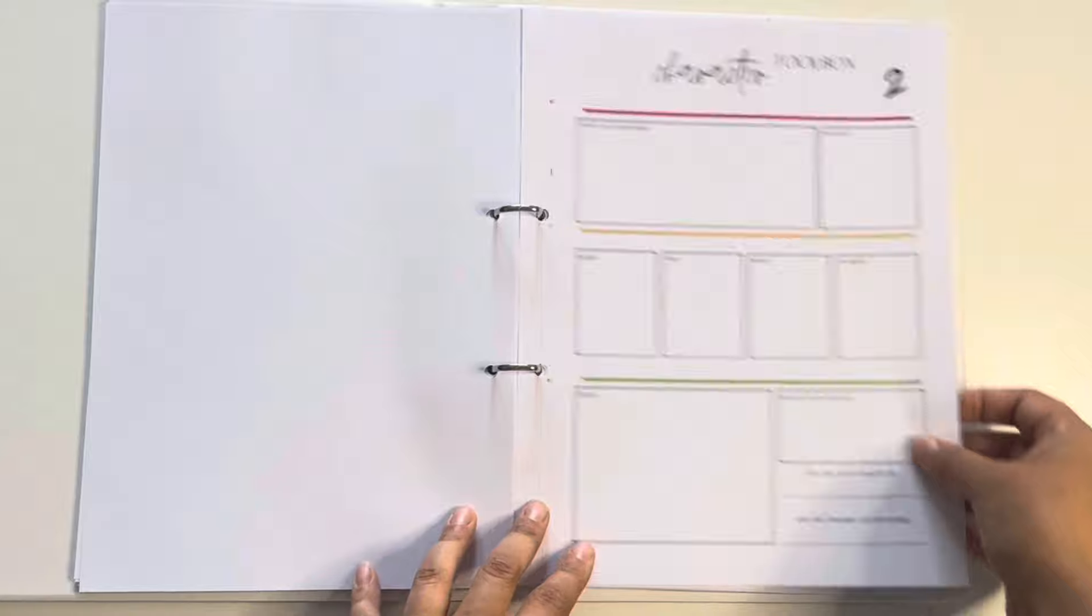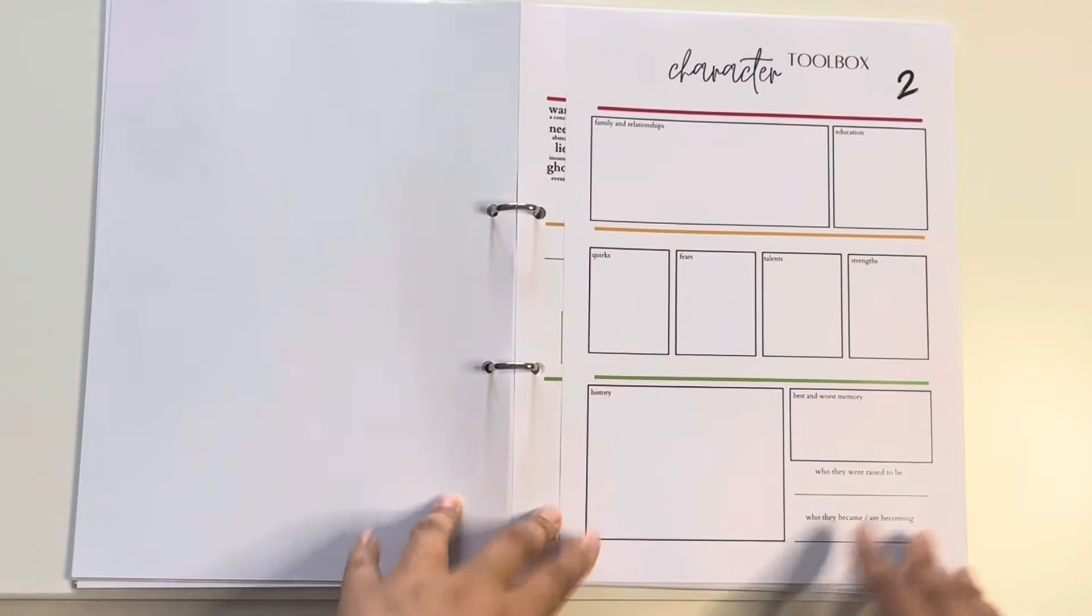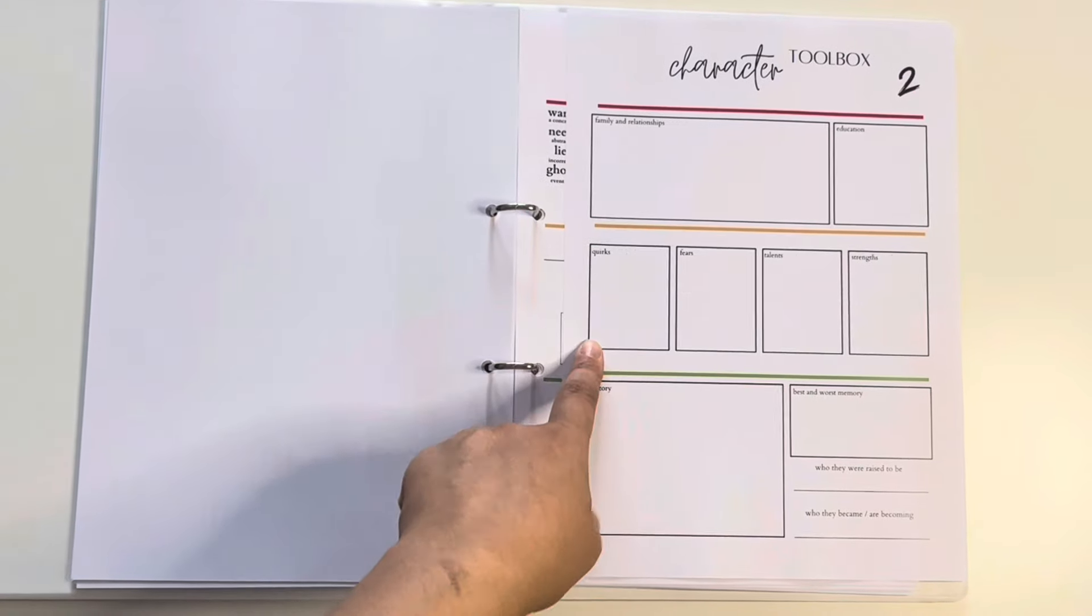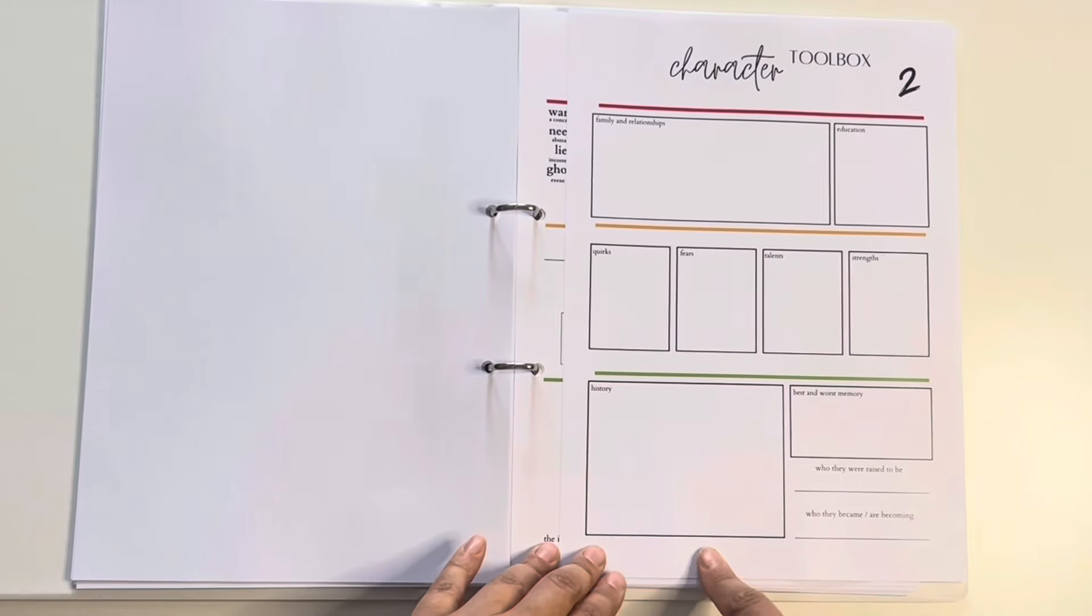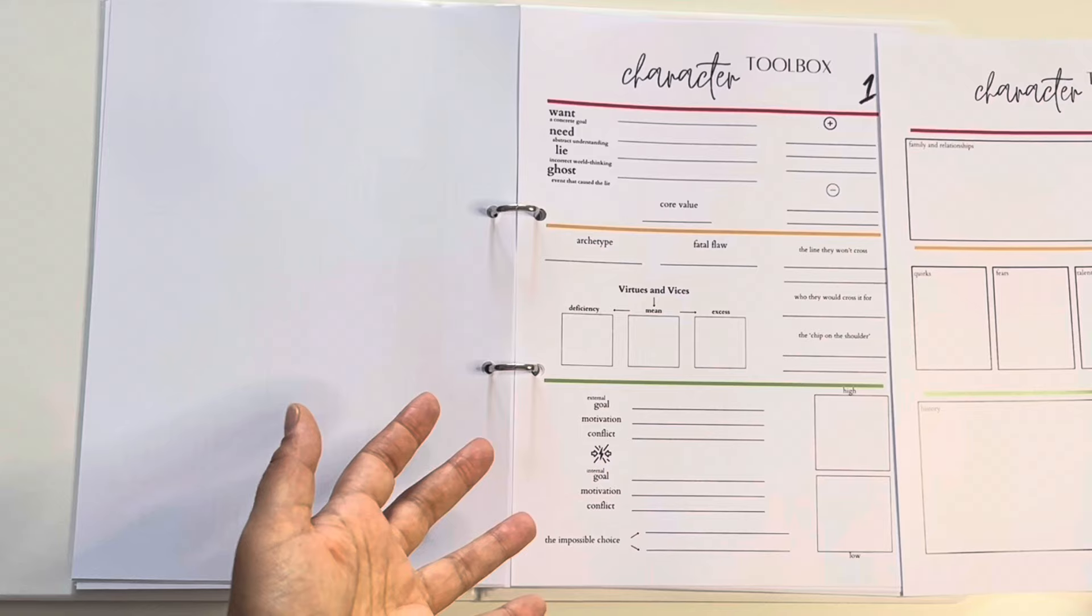And there should be a part two to the character toolbox, which for some reason is not in my folder, but I have spares. And again, the basics I'm going to need, their family relationships and their education. And then it gets more and more in depth about quirks, fears, talents, memories, their history. Everything that I have about the characters is going to be on these pages.